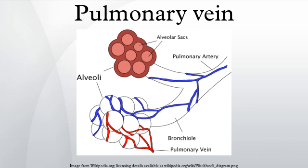Occasionally the three veins on the right side remain separate, and not infrequently the two left pulmonary veins end by a common opening into the left atrium. Therefore, the number of pulmonary veins opening into the left atrium can vary between three and five in the healthy population. The two left pulmonary veins may be united as a single pulmonary vein in about 25% of people, and the two right veins may be united in about three percent.